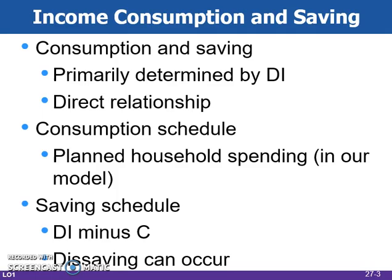DI represents disposable income, which is income after taxes have been taken out, and it's the most important determinant of C, which is consumption spending. What is not spent is called savings. Both consumption and savings are directly related to the level of income.